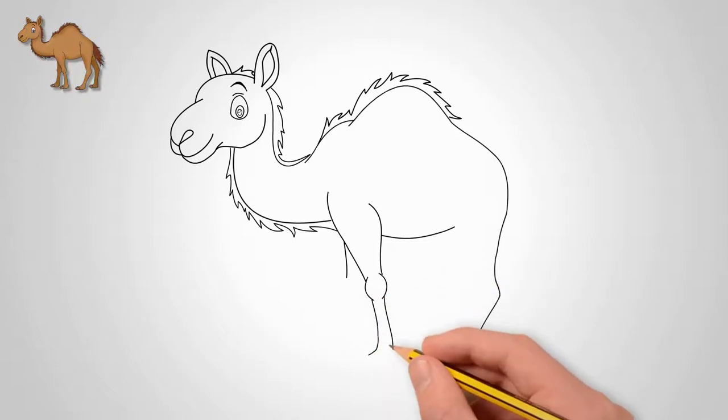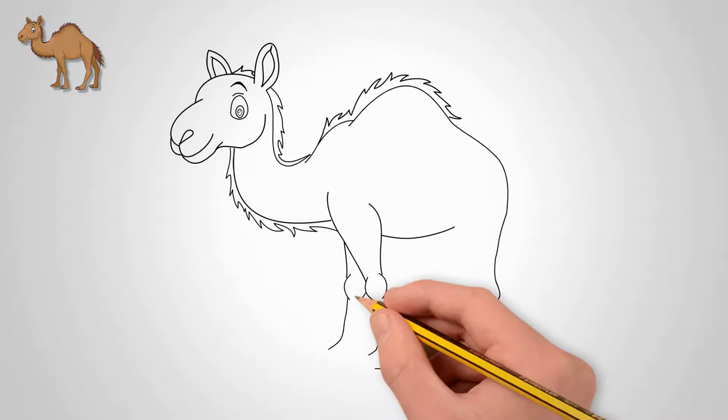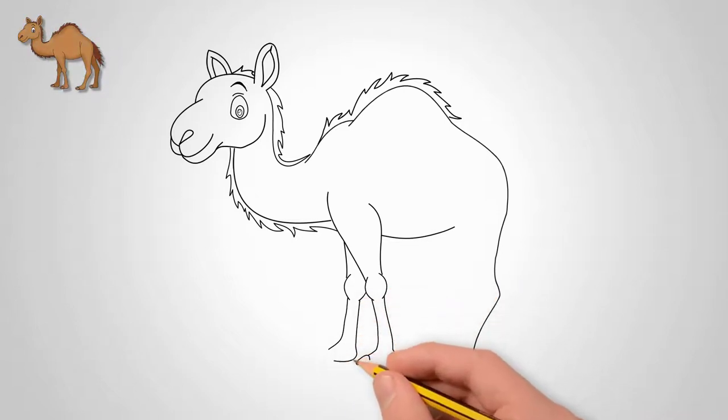Each foot has toes. We draw fingers and fingernails. Count how many fingers a camel has. And look at the shape of the sole of the camel's foot.